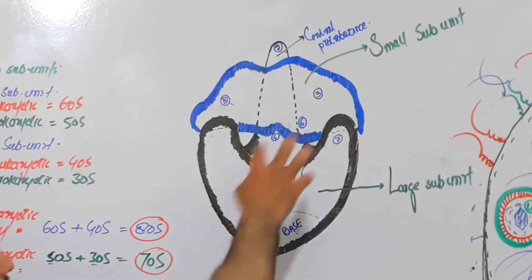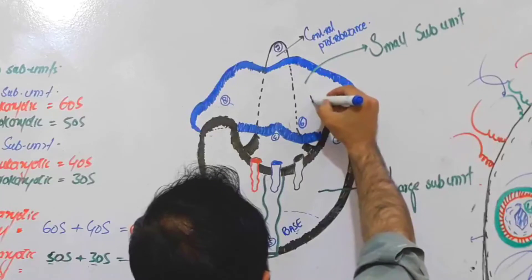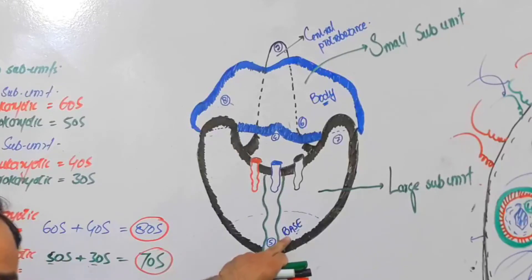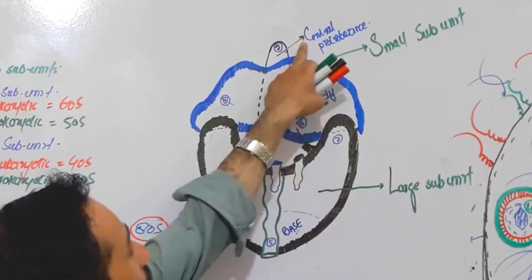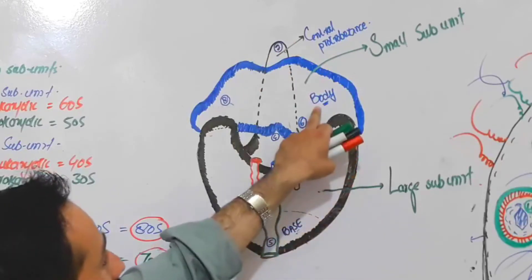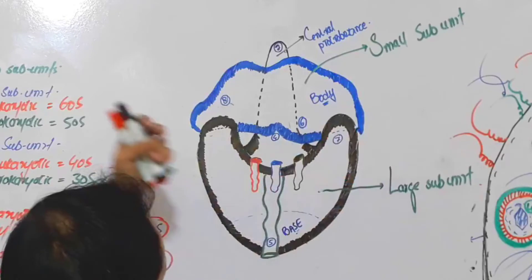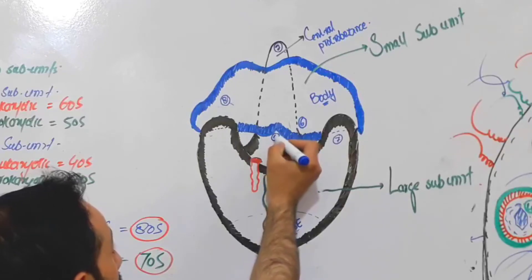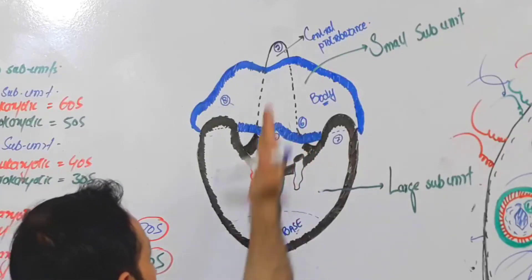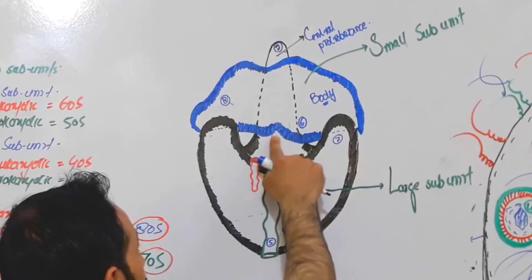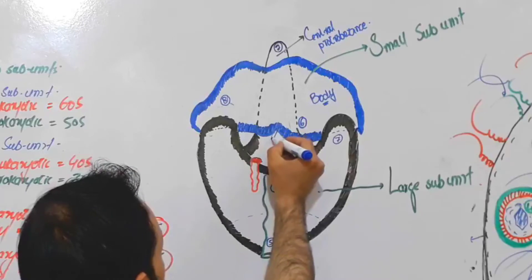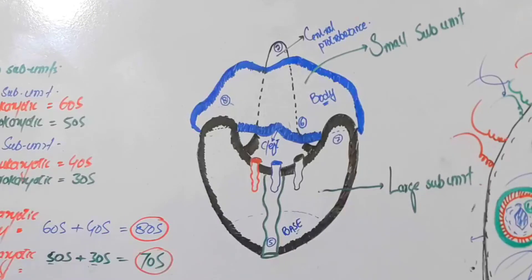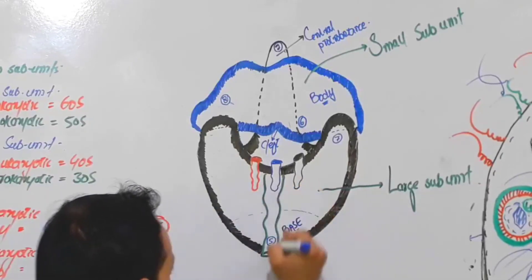The third part is in the small sub-unit and is called the body of the ribosome. So: the base is part of the large sub-unit, the central protuberance is part of the large sub-unit, and the body is part of the small sub-unit. The fourth part is where the small sub-unit goes slightly inward, forming what is called the cleft of the ribosome.